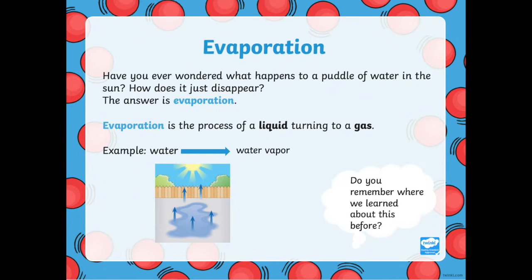First, let's talk about evaporation. Have you ever wondered what happens to a puddle of water in the sun? How does it just disappear? The answer is evaporation. Evaporation is the process of a liquid turning to a gas — for example, water turning to water vapour. The heat from the sun has caused the liquid water to evaporate into water vapour.